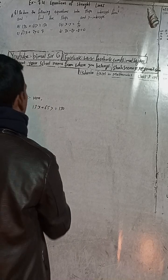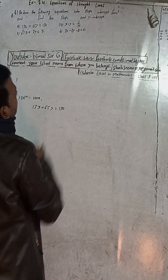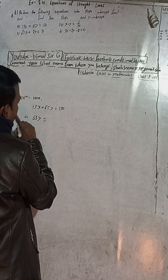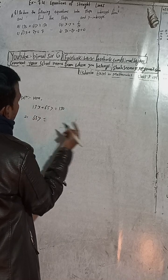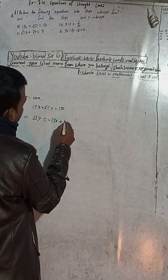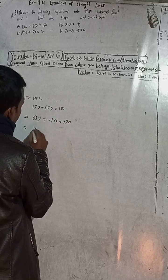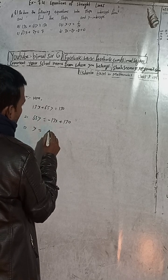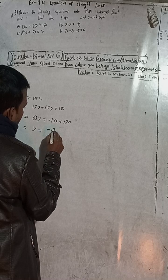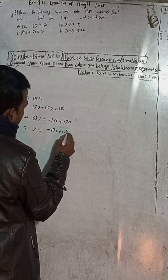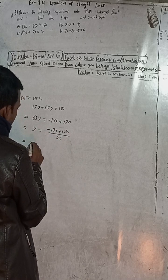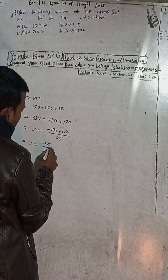To find the equation in slope-intercept form, first keep 65y on the same side, and take 13x to the other side. That gives us minus 13x plus 130. Now divide both sides by 65. So we get y is equal to minus 13x by 65 plus 130 by 65.